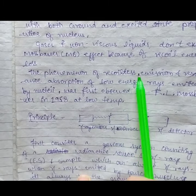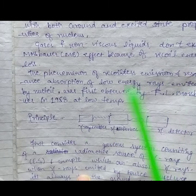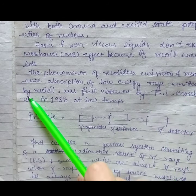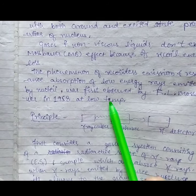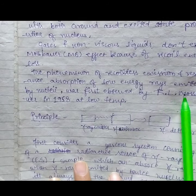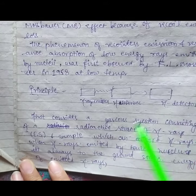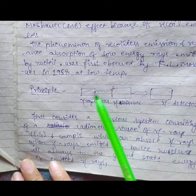The phenomenon of recoilless emission and resonance absorption of low energy rays emitted by nuclei was first studied and observed by R.L. Mössbauer in 1958 at low temperature. Here it is a gamma ray transmitter.